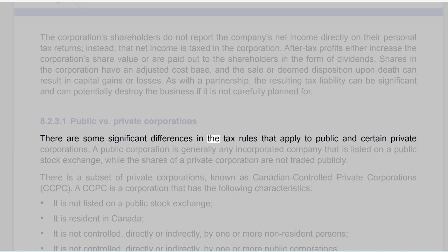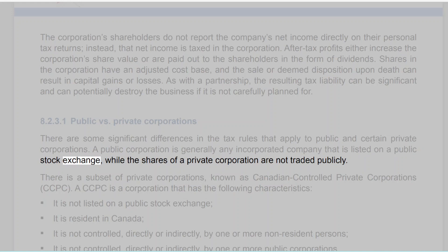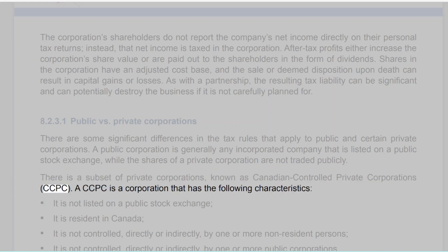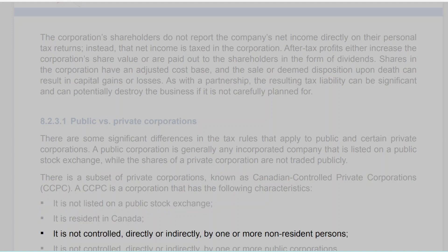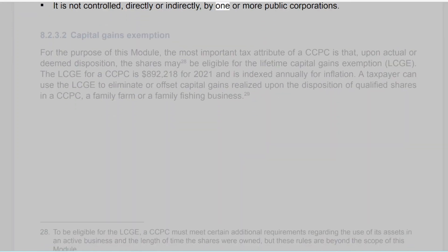There are some significant differences in the tax rules that apply to public and certain private corporations. A public corporation is generally any incorporated company that is listed on a public stock exchange, while the shares of a private corporation are not traded publicly. There is a subset of private corporations known as Canadian-controlled private corporations (CCPC). A CCPC is a corporation that: is not listed on a public stock exchange; is resident in Canada; is not controlled, directly or indirectly, by one or more non-resident persons; and is not controlled, directly or indirectly, by one or more public corporations.